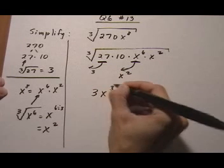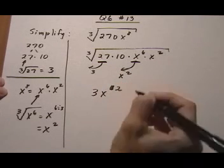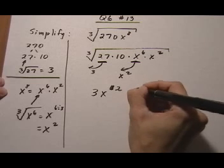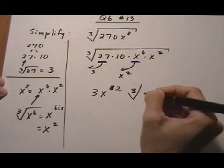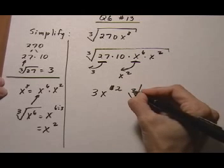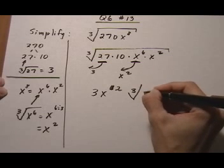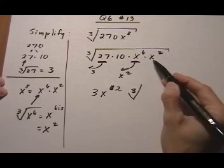So on the outside, I get 3x squared. And then the leftovers get rewritten on the inside. Cube root, and remember that little cube there because it's going to be a wrong answer in MyMathLab if you don't put the cube root symbol. The leftovers are 10 and x squared.